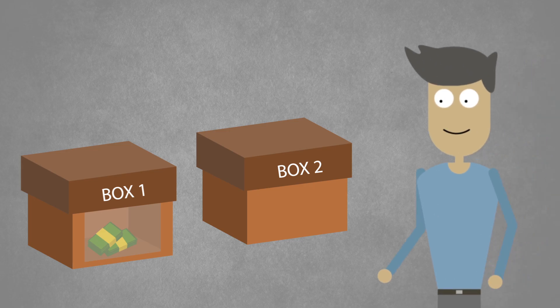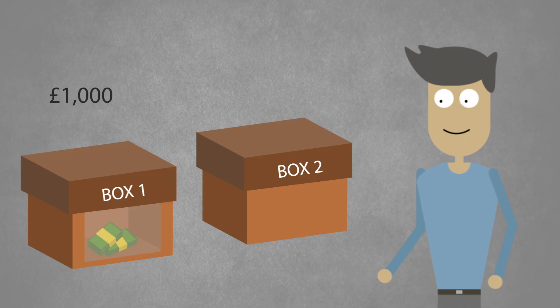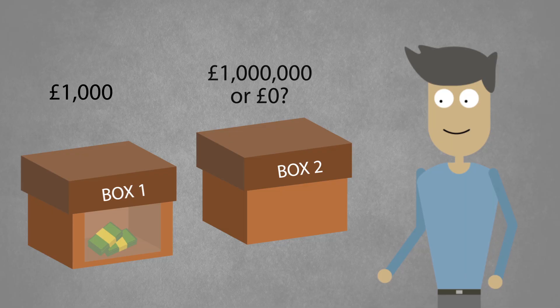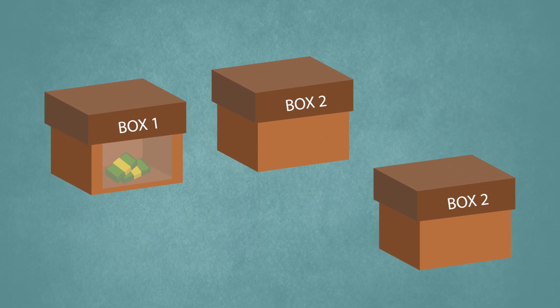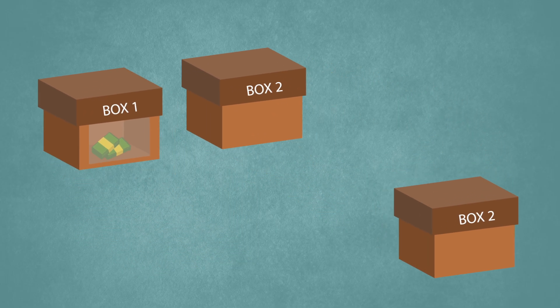In front of you there are two boxes. Box one is transparent and contains £1,000. Box two is opaque and contains either £1,000 or nothing. You are given the following choice: either you can take what is in both boxes, or you can take only what is in the second box.